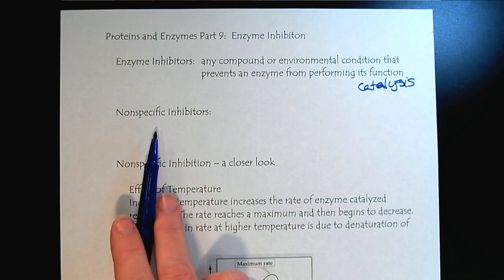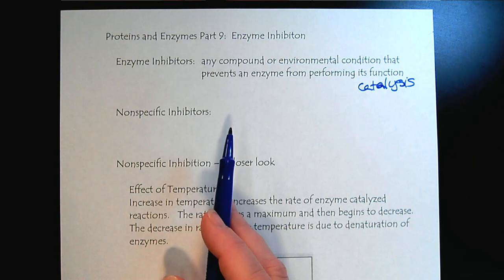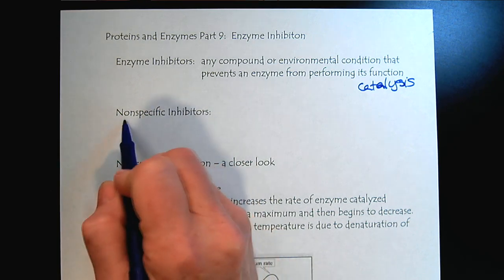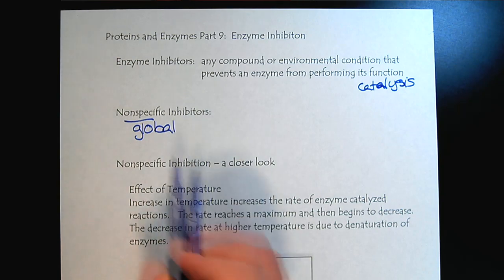So there are two different types of inhibitors. There are nonspecific and specific. For right now, we'll just focus on nonspecific. So this means they're very global. These are things that affect all enzymes.